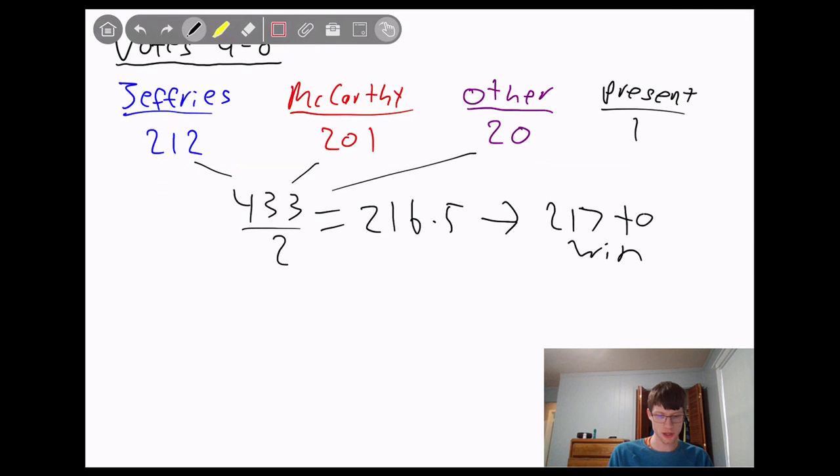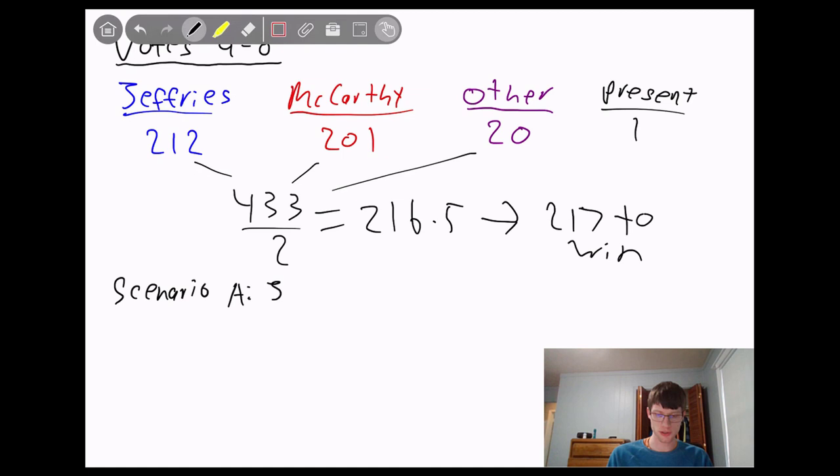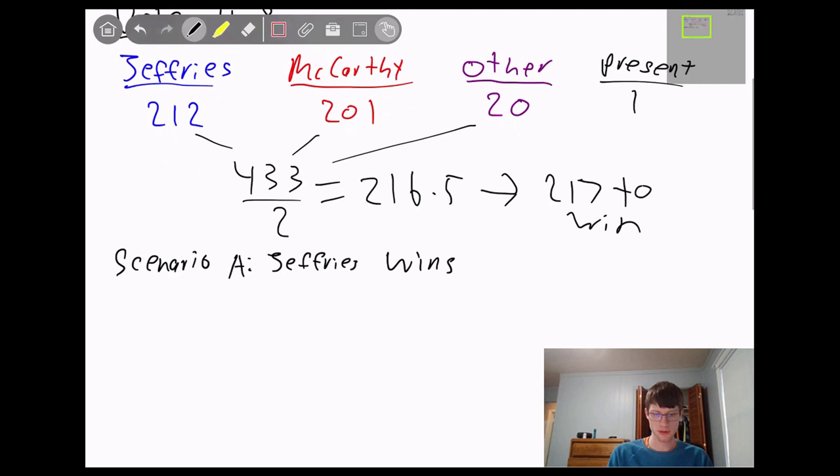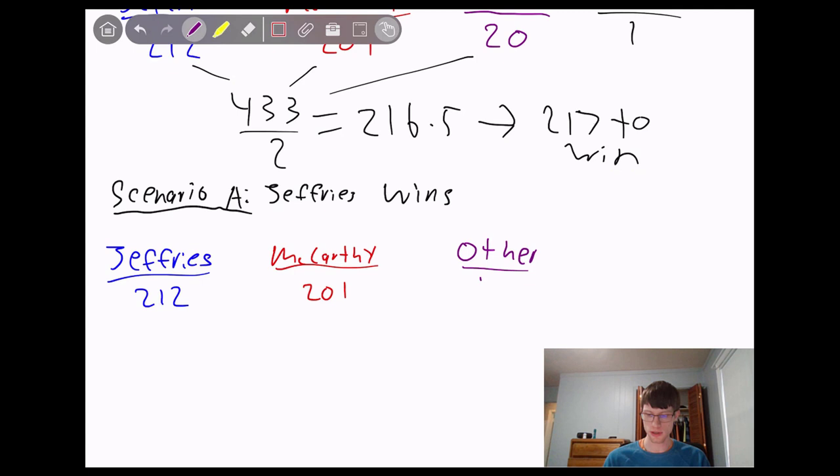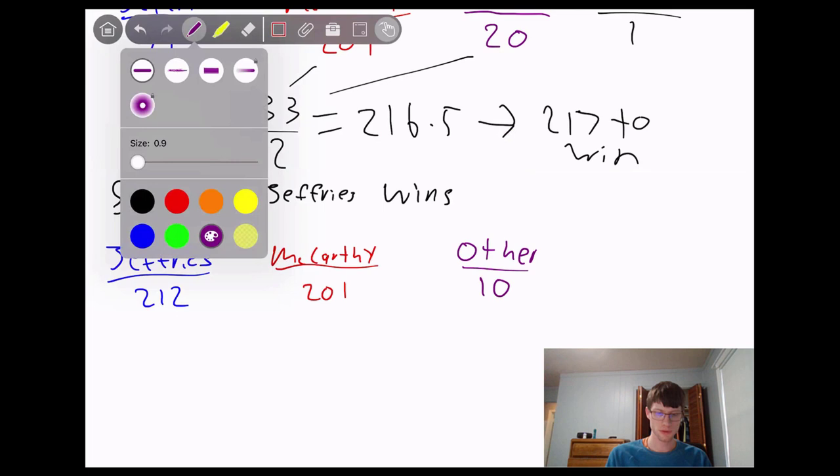Well, it turns out if they were to all vote present, then the total would change. We would no longer be out of 433. We would be out of something less. And it could perhaps give the Speakership to the Democrat Jeffries. And they don't want that because all these people are Republicans. So this is a theoretical situation. Let's just call this scenario A. And this could be Jeffries wins. We could have all the Democrats continue to vote for Jeffries. And we could just assume that McCarthy, all of those people who had McCarthy, they are sticking as well. But let's just say some of those other votes transfer over. So let's say we lose 10 of those votes. So instead of 20, we have 10 other votes and the rest of the people are all just voting present.